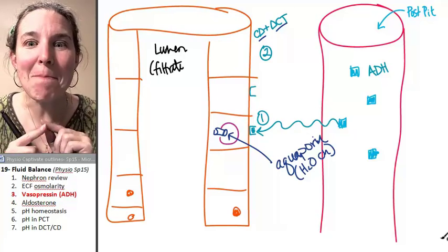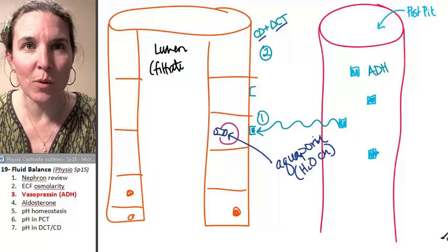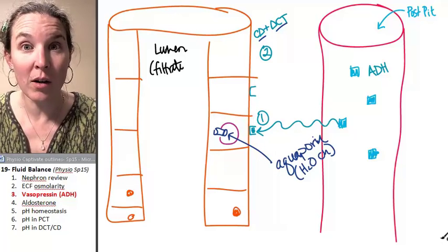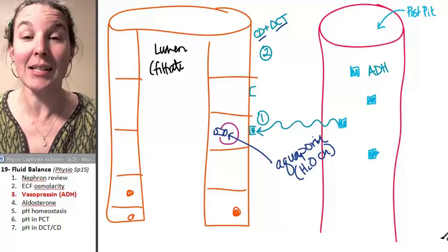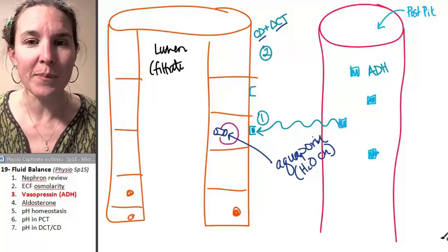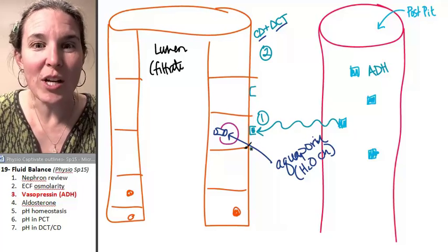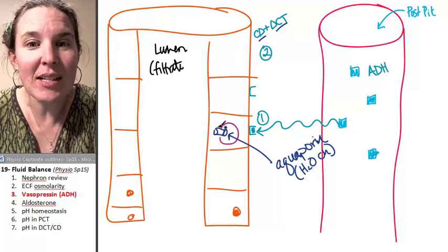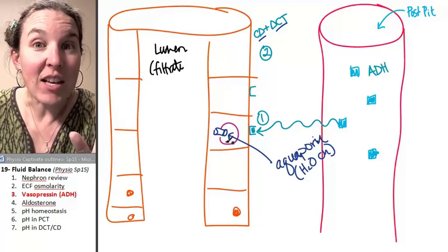But we can make the collecting duct and the distal convoluted tubule permeable to water. We can make it happen. We can go rogue. Say, dude, it's time to get permeable to water by throwing in some vasopressin, which causes exocytosis of these aquaporin-containing vesicles.